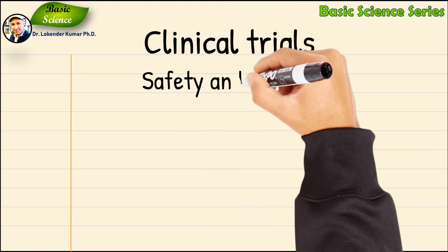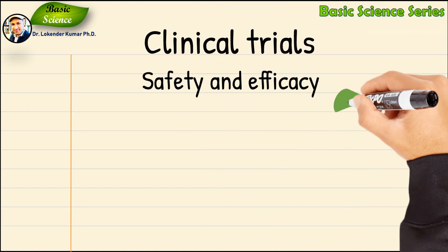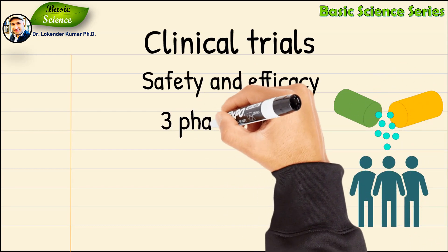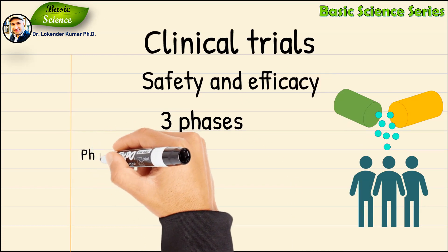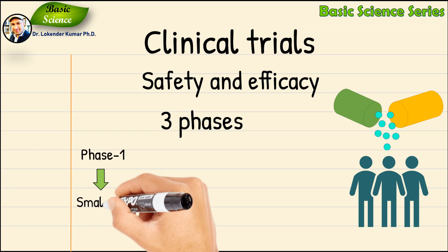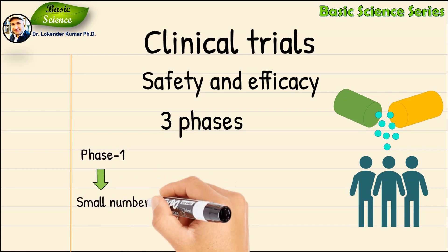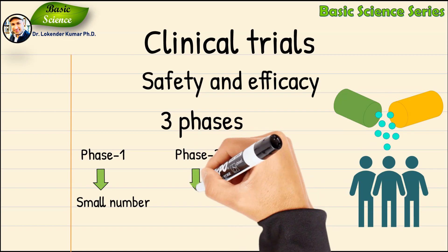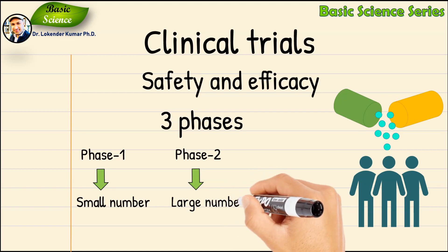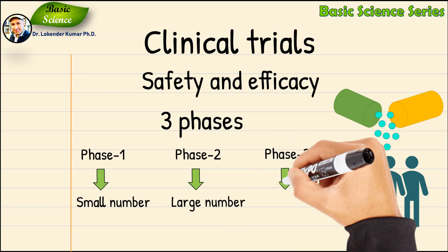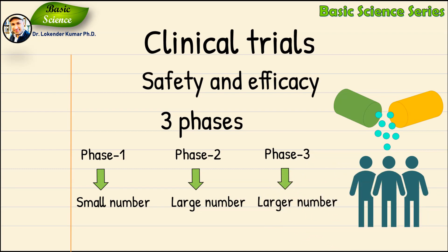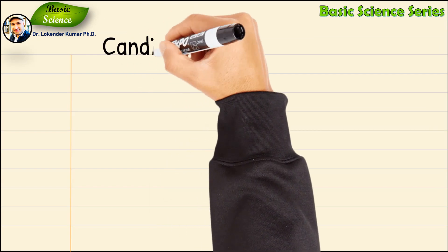The next stage is clinical trials, which evaluate the efficacy and safety of the drug candidate in humans. They are conducted in three phases. Phase one trials involve a small number of healthy volunteers and are designed to assess the safety and pharmacokinetics of the drug. Phase two trials involve a larger number of patients and evaluate the drug's efficacy and safety in the target population. Phase three trials involve an even larger number of patients and are designed to confirm the drug's efficacy and safety in a broader population.